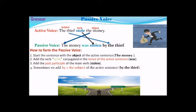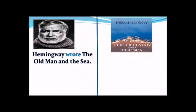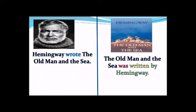Now let's try another example in the simple past. Hemingway — an American writer — wrote 'The Old Man and the Sea,' a wonderful novel I advise you to read. We start with the object: 'The Old Man and the Sea.' The sentence becomes: 'The Old Man and the Sea was written by Hemingway.' We add 'to be' in the simple past and the past participle 'written.'